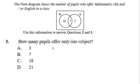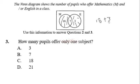Question 3: how many people offer only one subject? Mathematics only is the region with 18, and English only is the region with 3. So only one subject equals mathematics only plus English only, which is 18 plus 3, giving you 21. The correct answer is C.